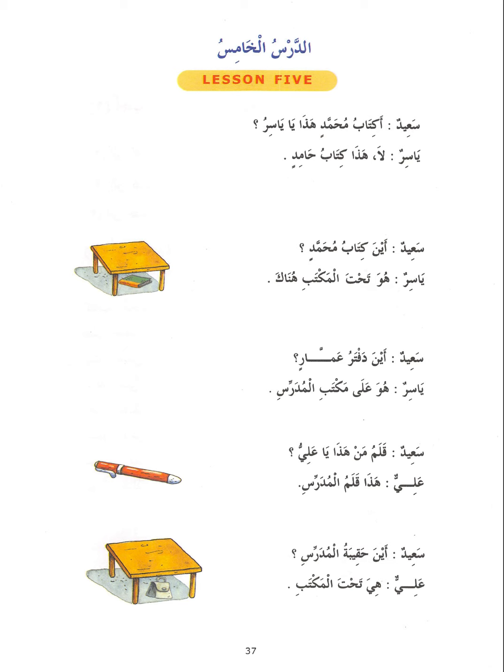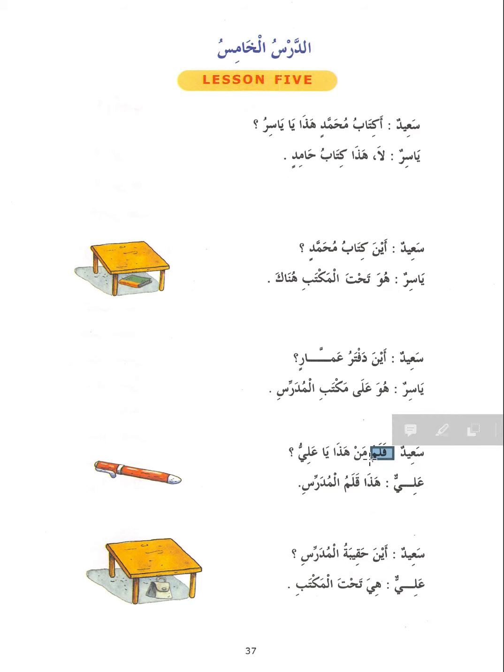For example, you say Maktabu al-mudarrisi. You don't say Al-maktabu al-mudarrisi, and you don't add tanwin. You say Maktabu al-mudarrisi. Other examples: Kitabu Amirin, Kitabu Zaydin, Qalamu man. Man here is a mudhaafun ilayh but it's mabni — indeclinable — so there is no change in its ending to indicate its grammatical function.